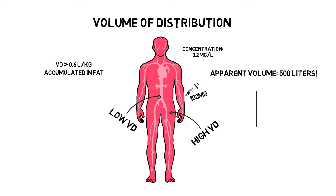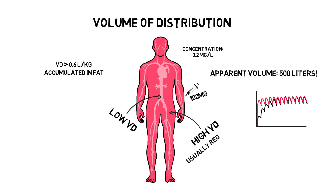So why is this important? You can imagine that if a drug has a high volume of distribution, it will take quite some time to get your desired drug concentration in plasma if you don't quote-unquote fill up the bucket first. In other words, drugs with a high volume of distribution usually require a loading dose. Please note that the plasma concentration after a loading dose is therefore only dependent on the volume of distribution, and not on clearance, explained in the next video.